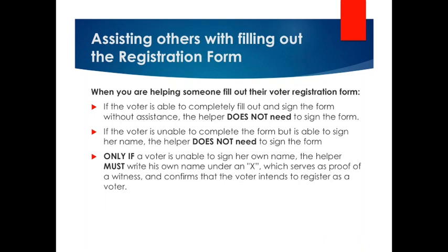If you're assisting others with filling out the registration form, you might come across someone who's unable to fill it out themselves. If the voter can completely fill out and sign the form without assistance, you don't need to sign it. If the voter is unable to complete the form but is able to sign their name, you may help them fill it out — you don't need to put your name. The only time a volunteer needs to include their own name is if the voter is unable to sign, in which case they make an X and you write your name right underneath. Your name serves as proof of a witness and confirms that the voter intends to register.